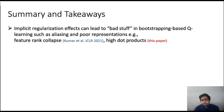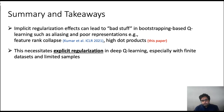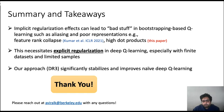To summarize: we discussed how implicit regularization effects can lead to problems in Q-learning and TD learning, such as co-adaptation, aliasing, and poor representations. This means we need to add an explicit regularizer to deep Q-learning algorithms to make them learn good features, which is especially important with finite datasets and limited samples. This approach significantly stabilizes and improves naive TD learning algorithms. Thank you.